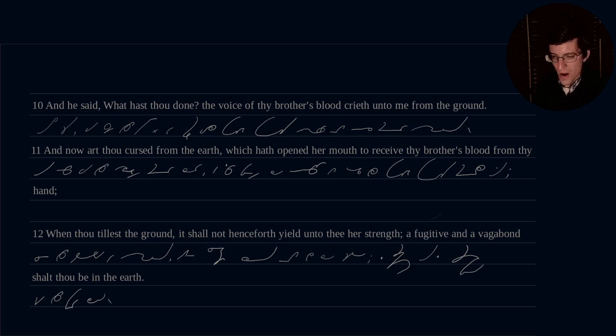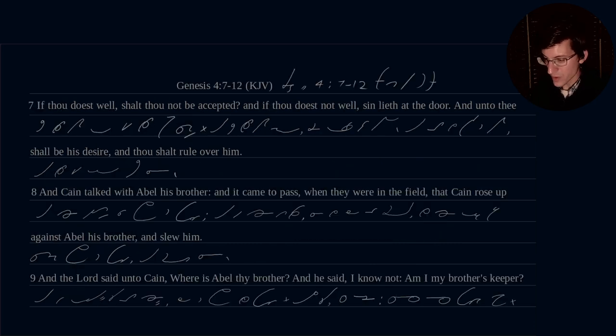All right, so that concludes Genesis, our second drill, for Genesis chapter 4, verses 7 through 12. Have a wonderful day. If you enjoyed this content, consider giving the video a like, share it with your friends, leave a comment below, I'd love to hear from you, and now go forward and practice a little Greg shorthand. Bye-bye.